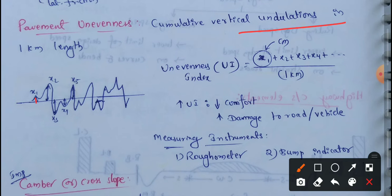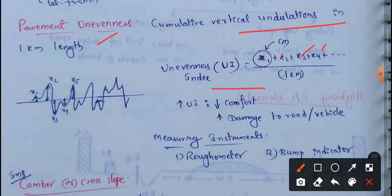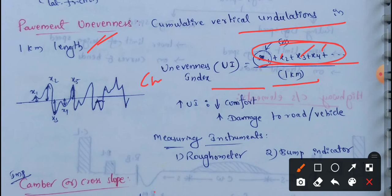The x1 value increases by some small height. The x2 value also increases. The x3 will decrease, the fourth also decreases, and then the fifth increases — measured every cm. We can find this using the instrument. The unevenness index will be x1, x2, x3, x4, and so on, measured over a length of 1 km. This is the cumulative vertical undulations per unit horizontal length of the road. The unit is cm per km.